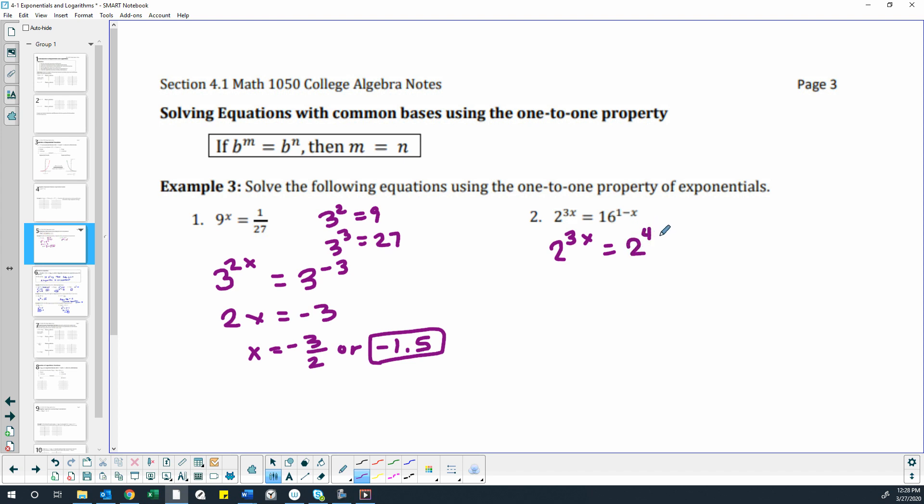But our 16 already had a power of 1 minus x. We can't forget about that. When we have a power with a power, we multiply those powers together, so that would give us 2 to the 4 minus 4x power.